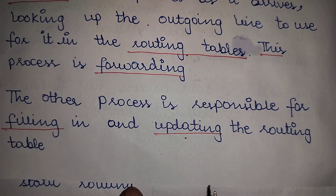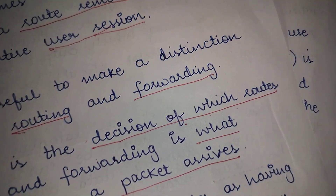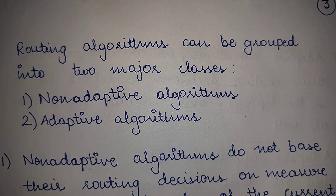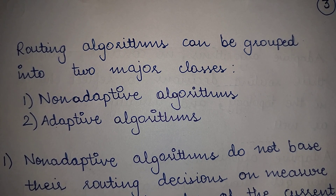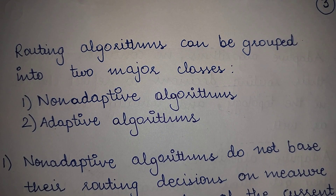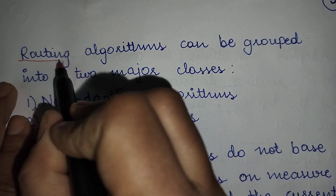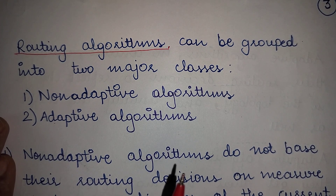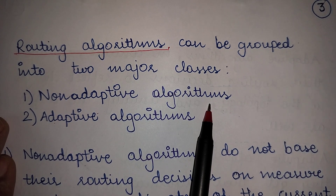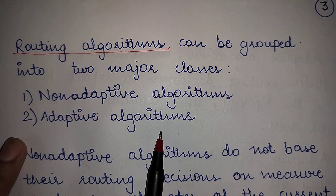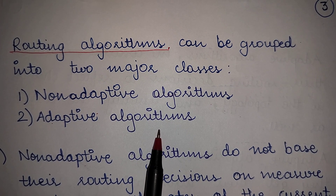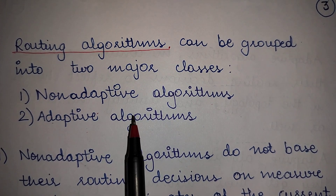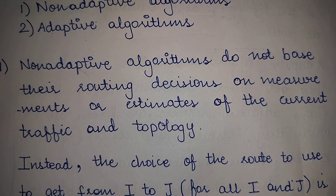So a router has two processes: one chooses an optimal route for an incoming data packet so it can be forwarded through the best available path, and the other fills in and updates the routing table. There are various algorithms for filling in and updating routing tables. These are known as routing algorithms, and they can be grouped into two major classes: non-adaptive routing algorithms and adaptive routing algorithms.